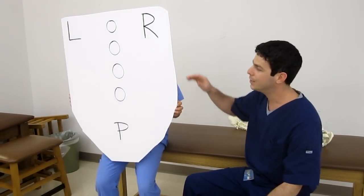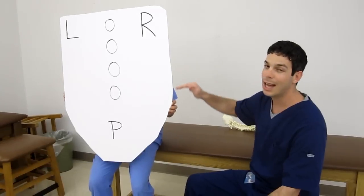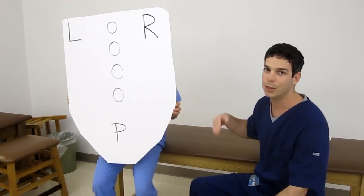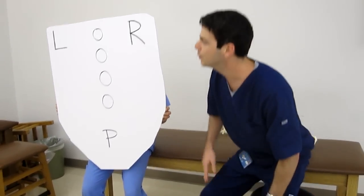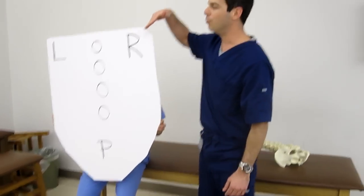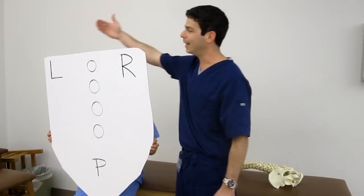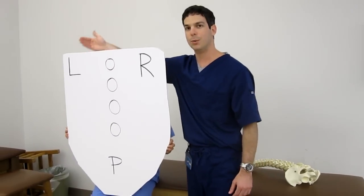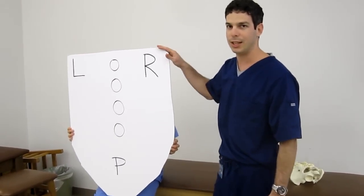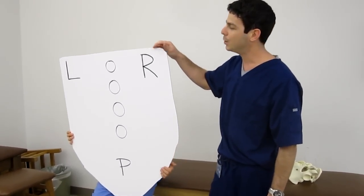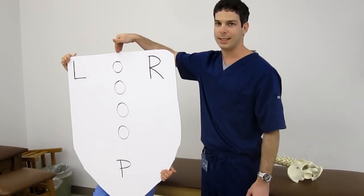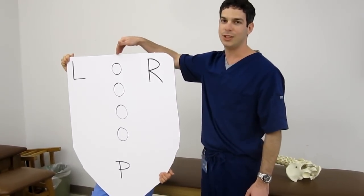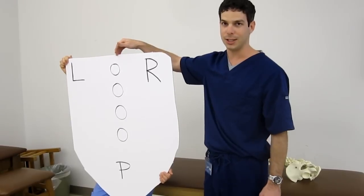In addition to these physiologic axes we're also going to be discussing some pathologic axes. These will be the right and left oblique which will be engaged during a torsion, as well as a vertical axis that will be engaged during margination.